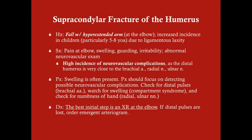The best initial step for any presentation suggesting a fracture — pain, swelling, guarding, irritability after a fall — is an x-ray at the affected site, in this case the elbow. If distal pulses (radial and ulnar arteries) are absent on physical exam, you'll want to order an emergent arteriogram. The arteriogram shows where the brachial artery or other damaged artery is injured, which is important information for the surgeon performing the repair.